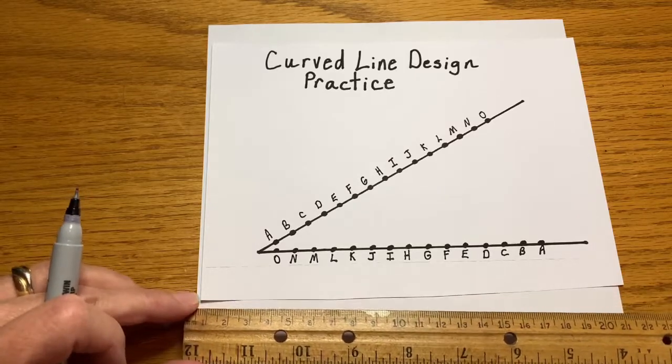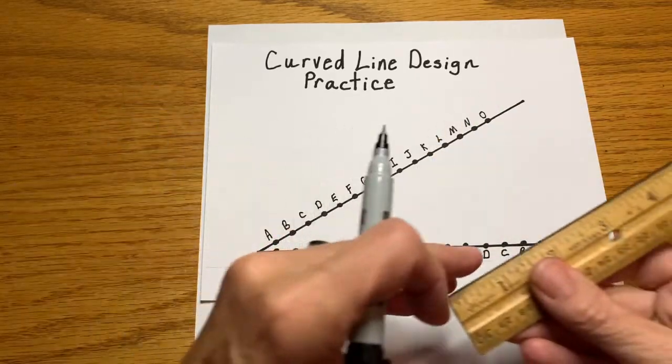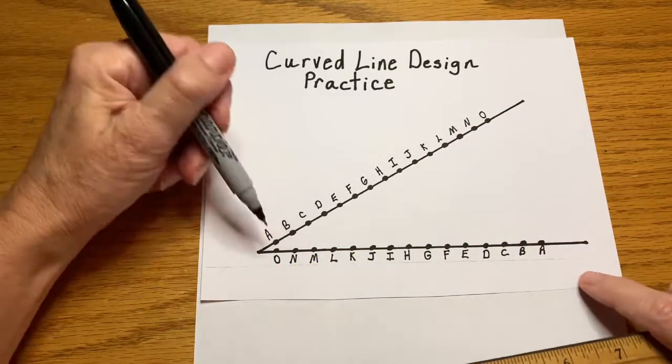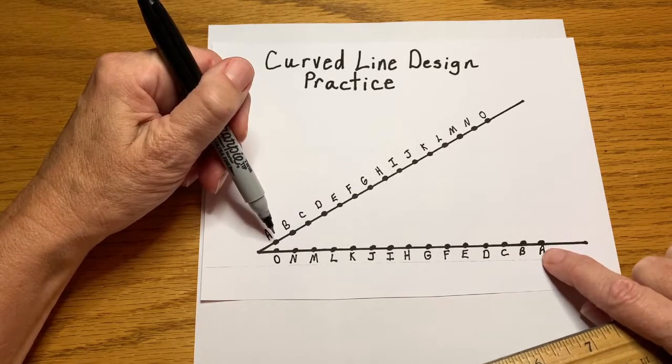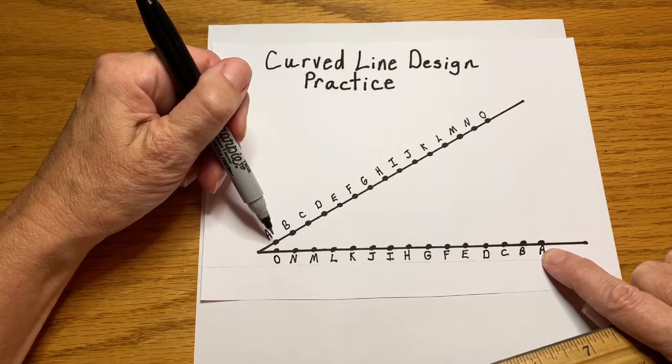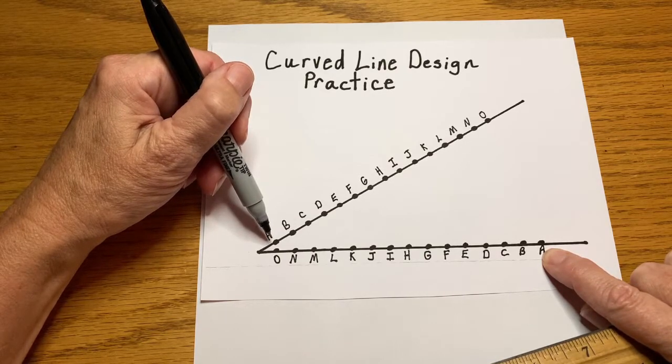These are labeled to kind of help me. You don't need to do this, but it's good for getting started. So, the dot closest to the vertices is A on this line, and the dot furthest from the vertices is A on the other line. These are the ones I connect.